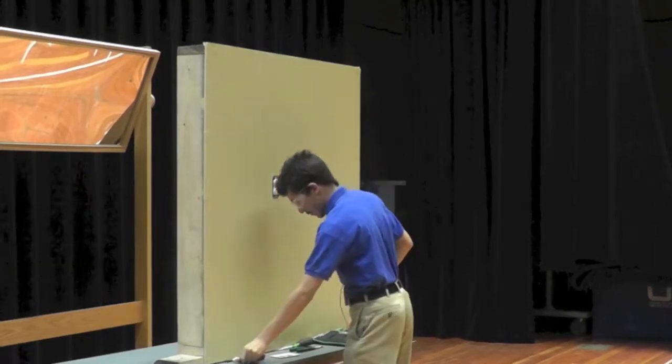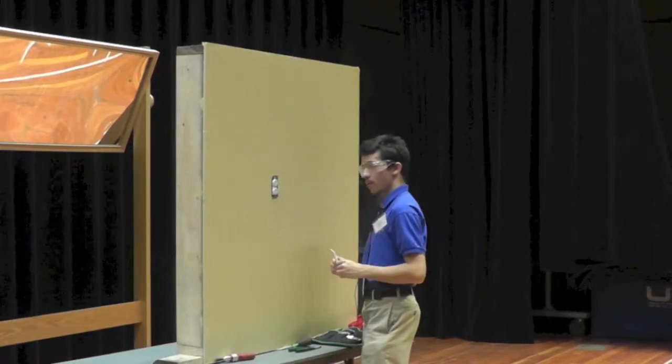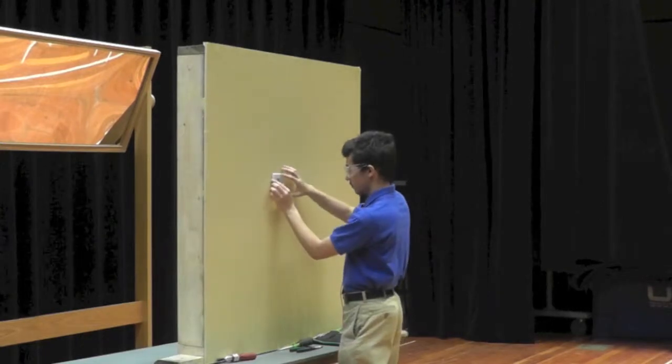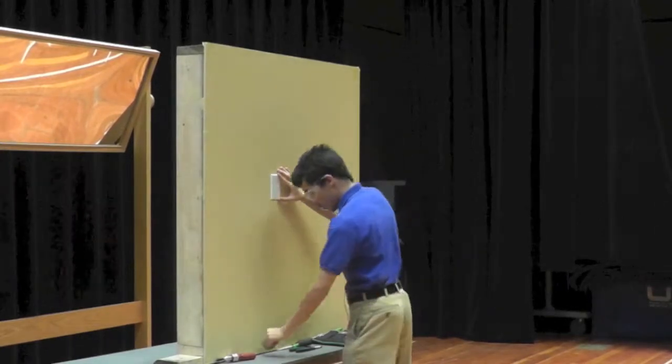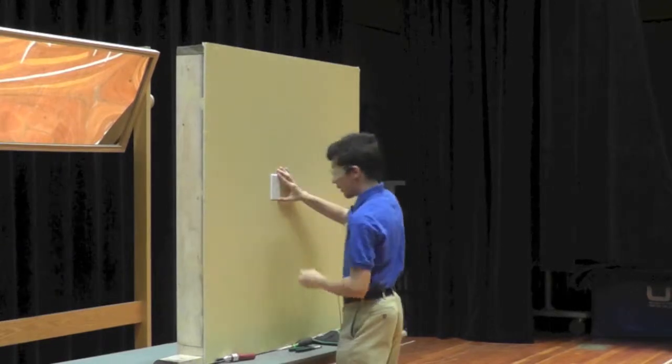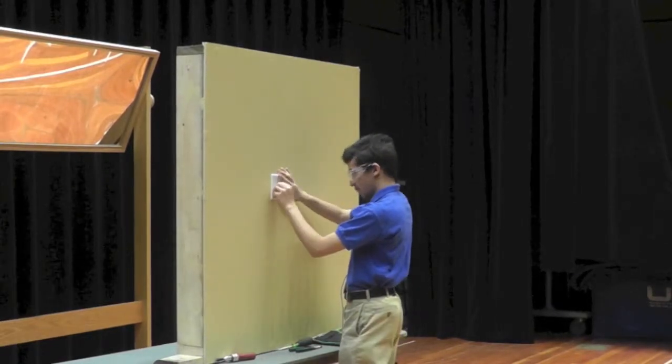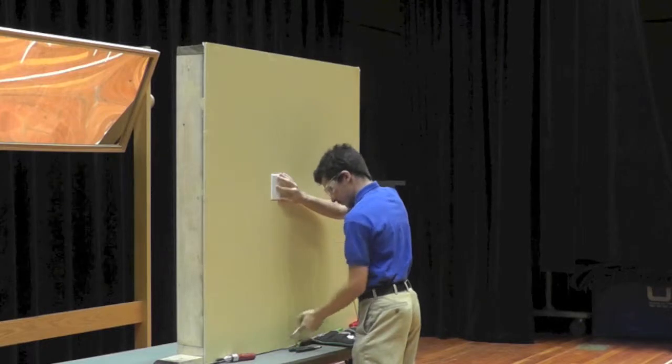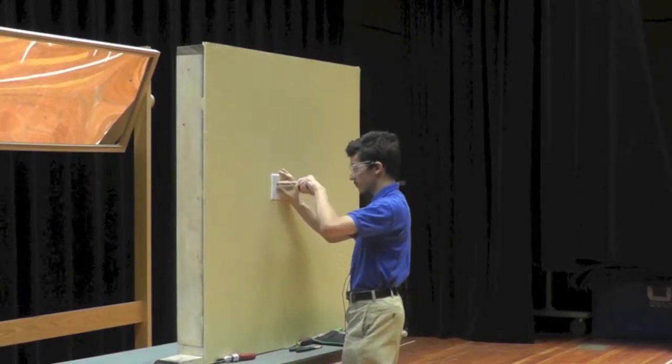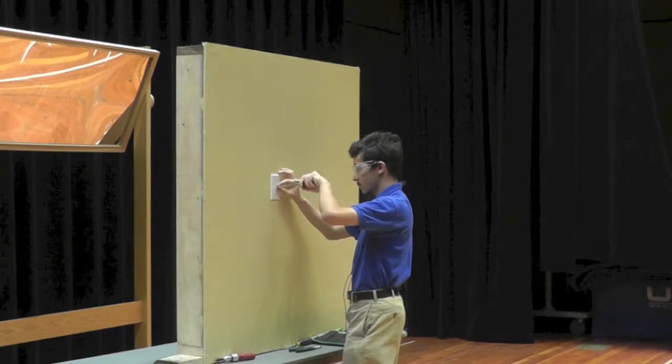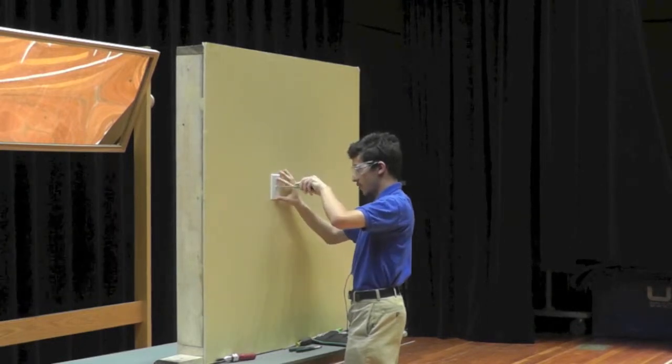As you can see, we have secured the receptacle and now we will be covering it once again. You place the plate over the receptacle and install the one screw in the center using a straight blade screwdriver. Ensure the cover is straight.